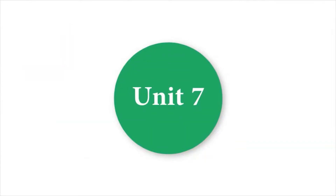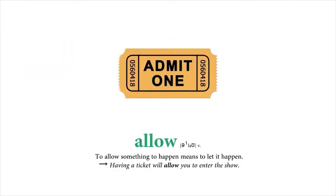Unit 7 Word List. Allow. To allow something to happen means to let it happen. Having a ticket will allow you to enter the show.